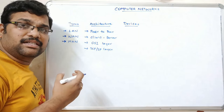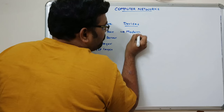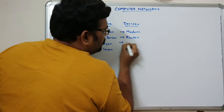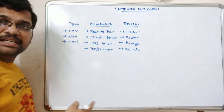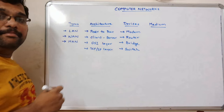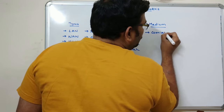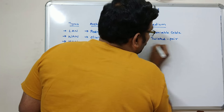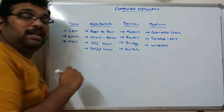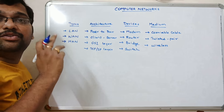We will use a number of devices in computer networks in further sessions — those are modem, router, bridge, switch, etc. Based upon the transmission medium — how we can share files from one computer to another — we will use coaxial cable, twisted pair cable, or wireless networks. With the help of all these, we can connect several computers and share resources.